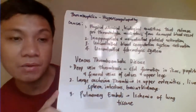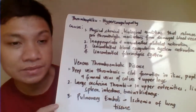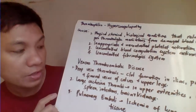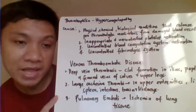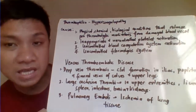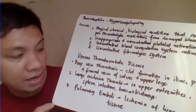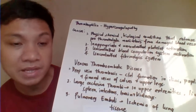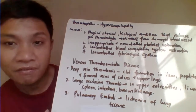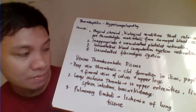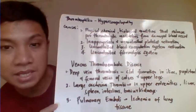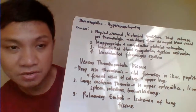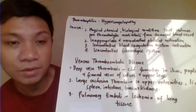We classify thrombosis as either venous or arterial. Venous thrombosis is found within the veins — for example, deep vein thrombosis, characterized by clot presence in the iliac, popliteal, femoral veins, and calves. Large thrombi form in the veins of the upper extremities, including the intestine, brain, and kidney. We also have pulmonary emboli, where the clot ascends into the pulmonary tract.